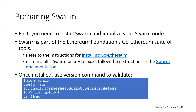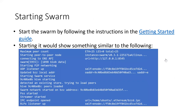To get started, you need to have Swarm installed and initialize your Swarm node. Swarm is part of the Ethereum Foundation's GoEthereum suite of tools, and you can follow the instructions for installing GoETH and installing your Swarm binary release following the Swarm documentation. Once installed, you can check what version you're running, and then you can start running Swarm.